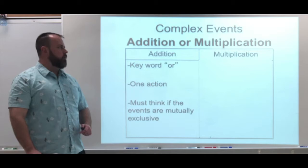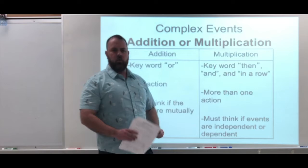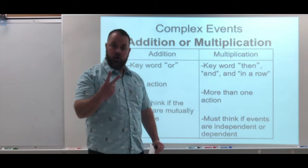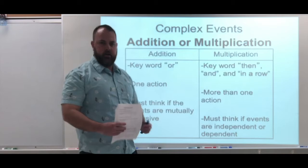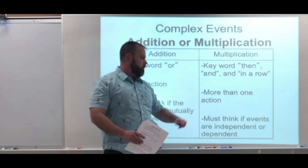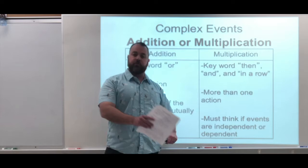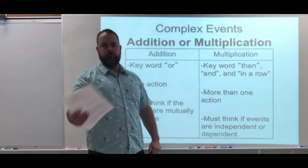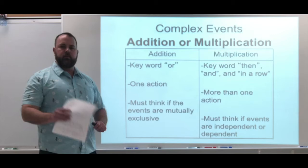For multiplication, the keywords are 'then,' 'and,' and 'in a row' — all meaning more than one action is happening. For example, pulling one card from a deck then pulling another is two actions. Picking three red cards in a row means three actions are happening, so that would be the multiplication rule. You also have to think about whether the events are independent or dependent. Independent means probabilities don't change from one action to the next; dependent means the outcome of the first affects the outcome of the second — that's conditional probability. We'll just be looking at some basic multiplication problems here.